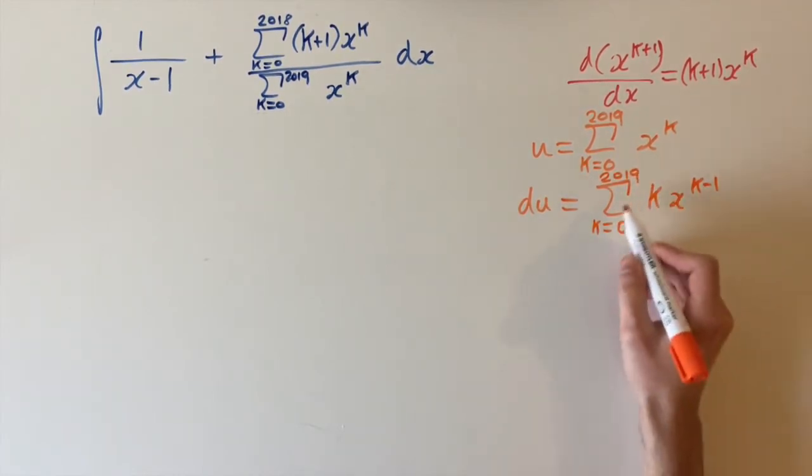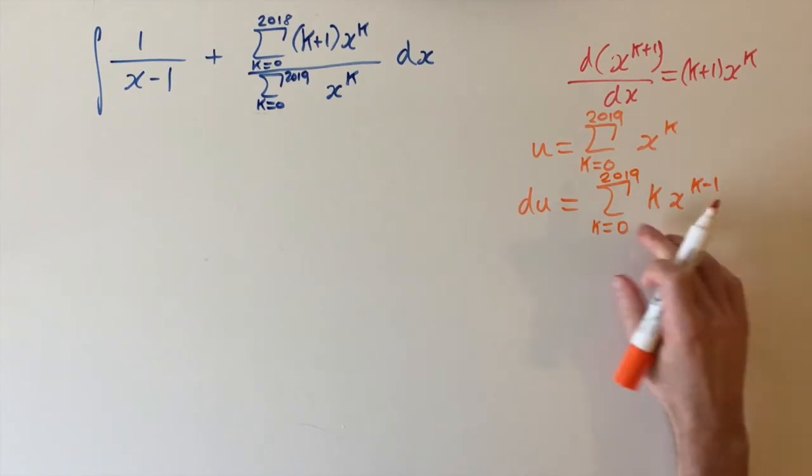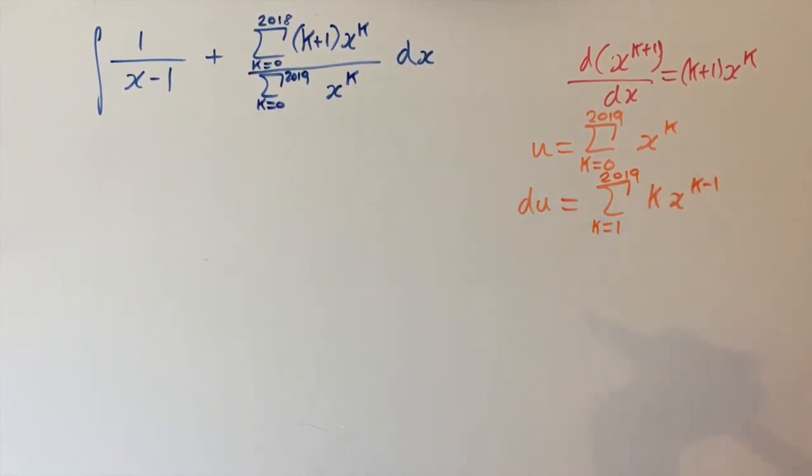However, we can notice something. So if we put k equals 0 into this formula here, we actually have 0. So the first term is going to be 0, no matter what the value of x is. So we can actually just start off our series from k equals 1. And then we also need a dx factor here. So this is multiplying this whole series.